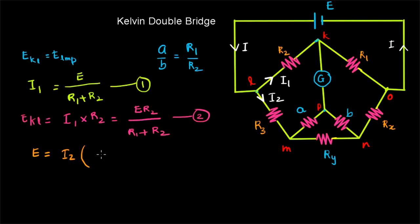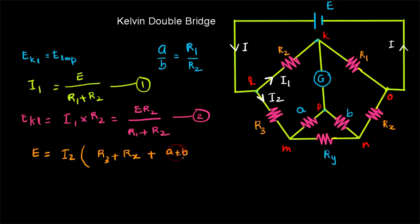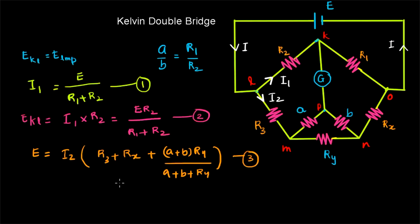The total EMF E is equal to I2 multiplied by the total resistance in the path, which is R3 plus RX plus the combination of A, B, and RY in parallel — that is, (A plus B) multiplied by RY divided by (A plus B plus RY). Let us call this equation number 3. If you substitute E from equation 3 into equation 2, you can get an equation for E_KL.